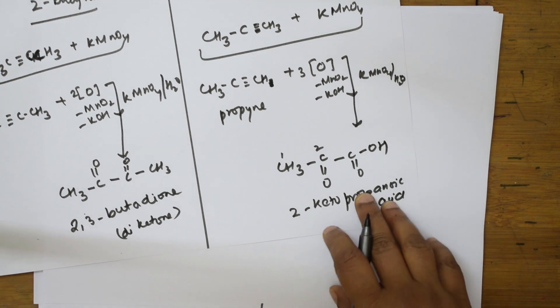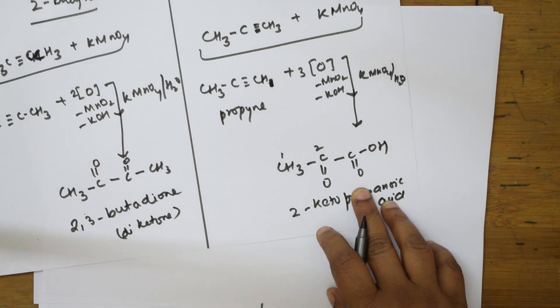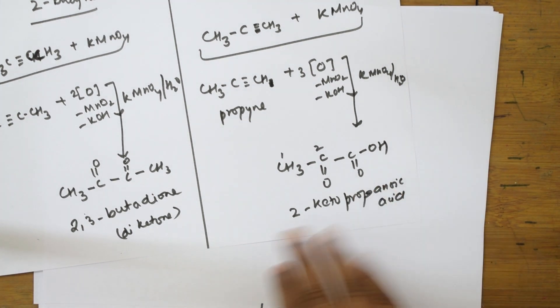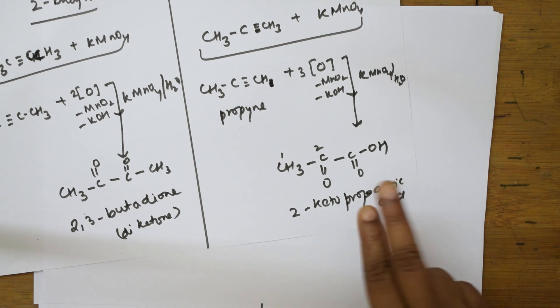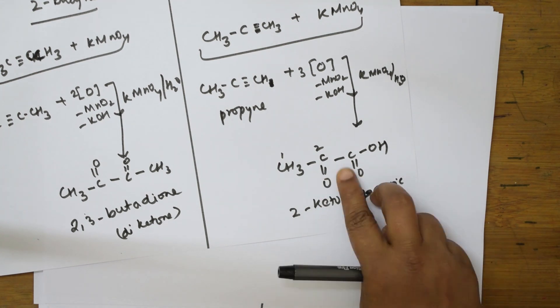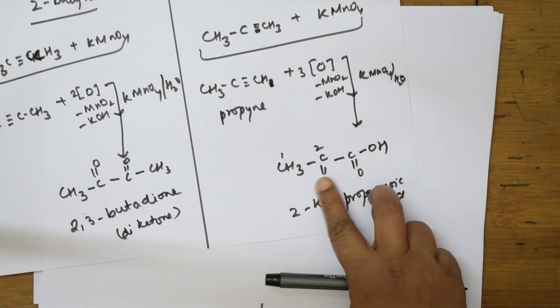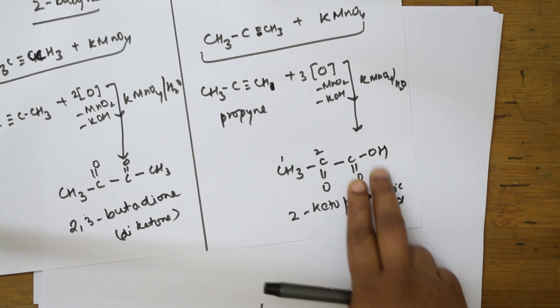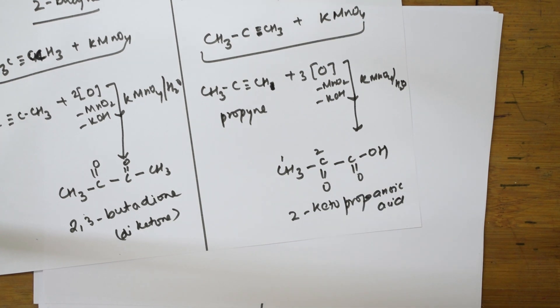How do you know how many nascent oxygens to add? Simple — just break the bond. Whenever you break the triple bond, you need to add oxygens on either side. This is your oxidation reaction with KMnO₄.